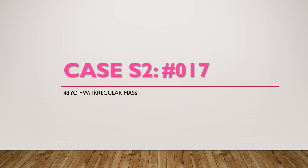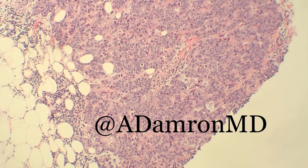Moving on to case number 17, case three in this lecture: a 48-year-old female with an irregular mass. We have an epithelial-looking lesion that appears to be infiltrating out into the fat — I don't really see definitive myoepithelial cells. These all look like epithelial tumor cells. When you start seeing epithelial cells trickling out into the fat, that's a sure sign this is an invasive or infiltrating process. Generally, benign breast tissue doesn't typically do that — the only real benign lesion that kind of infiltrates into the fat like this is microglandular adenosis, which this clearly is not.